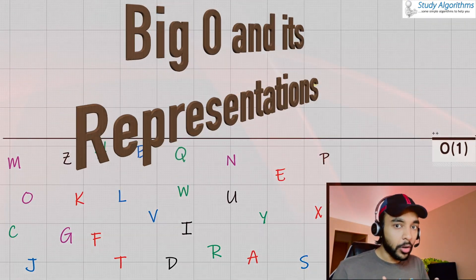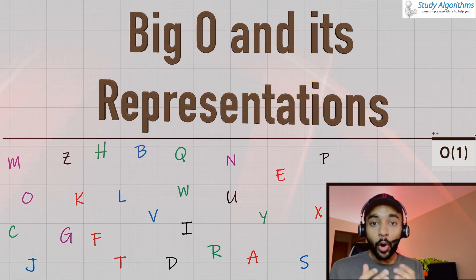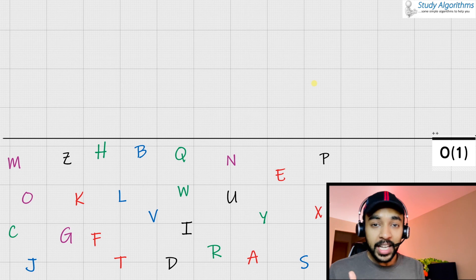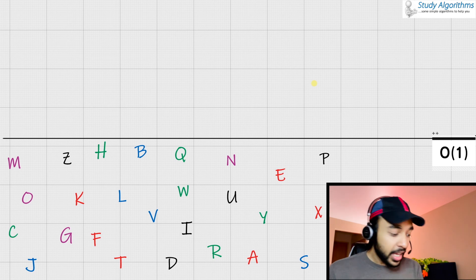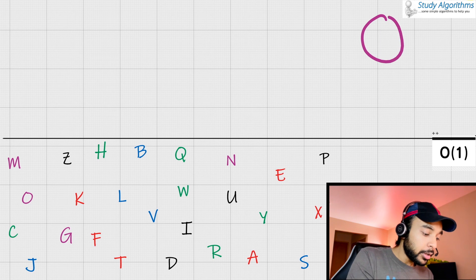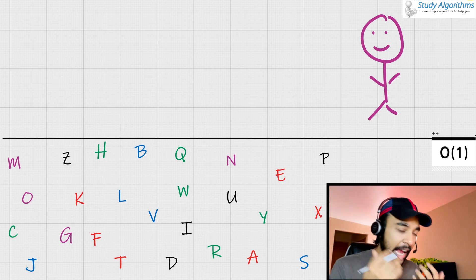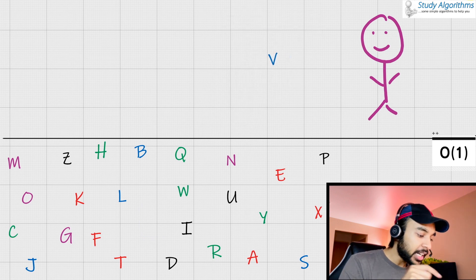Starting with order of one. Now order of one or I would say big O of one means a constant time complexity. Remember that in the beginning I told you we would be looking at examples even a kid could understand. So here are some alphabets lying around for you. Now I ask you to go ahead and pick an alphabet of your choice. Now since you are completely at your choice, you can just go ahead and pick up any letter. Let us say you pick up the letter V.